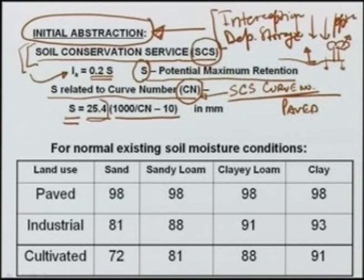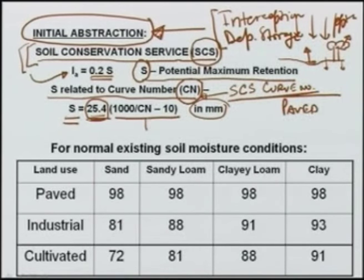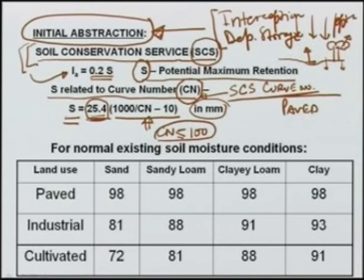The factor 25.4 converts inches to millimeters, since the formula was originally in inches, giving S = 25.4 × (1000/CN − 10). CN can be a maximum of 100; when CN equals 100, S will be 0, meaning there is no storage, so everything that falls on the surface will go as runoff with no infiltration or evaporation.